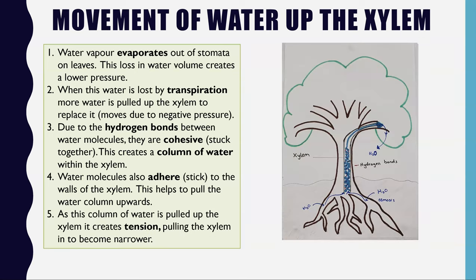In summary: transpiration is the loss of water vapour from the stomata by evaporation, occurring mainly on the leaves. Temperature, light intensity, humidity, and air movement all affect the rate. Cohesion between water molecules creates a continuous water column in the xylem. Adhesion of water molecules to the xylem walls creates capillarity. Tension from evaporation causes an upward pull on the water column, draws the xylem walls inward, narrows the diameter, and thus increases the action of capillarity even further.